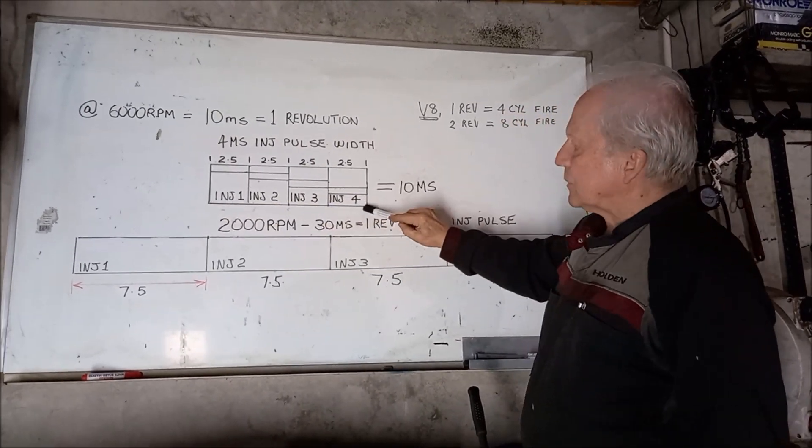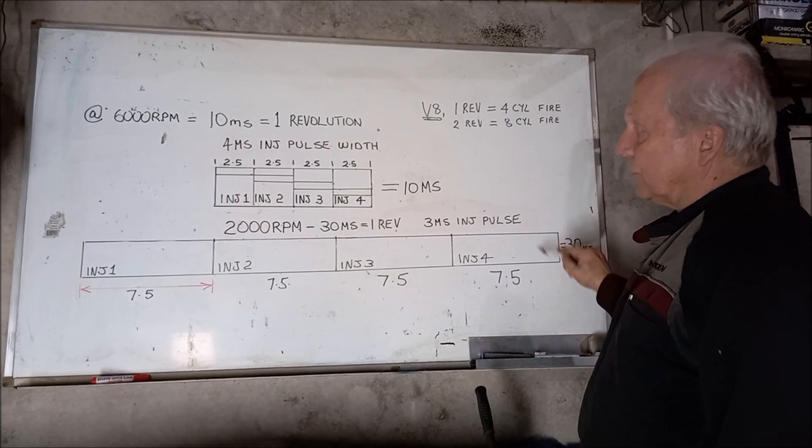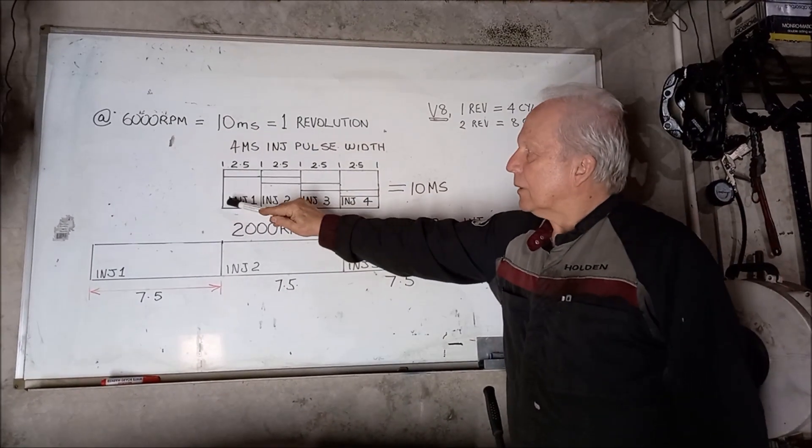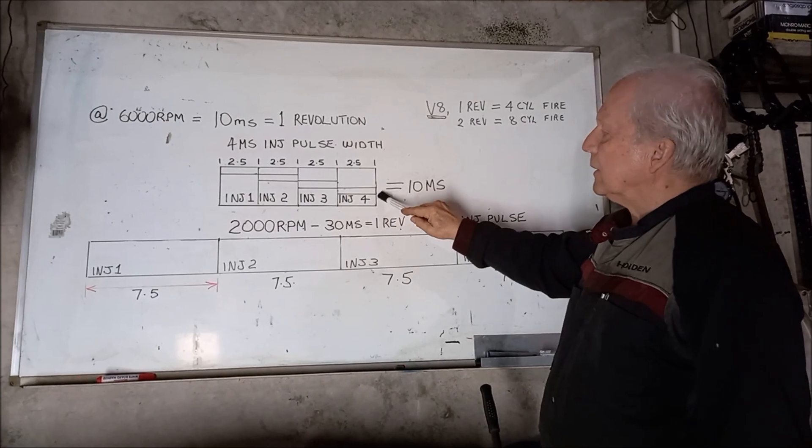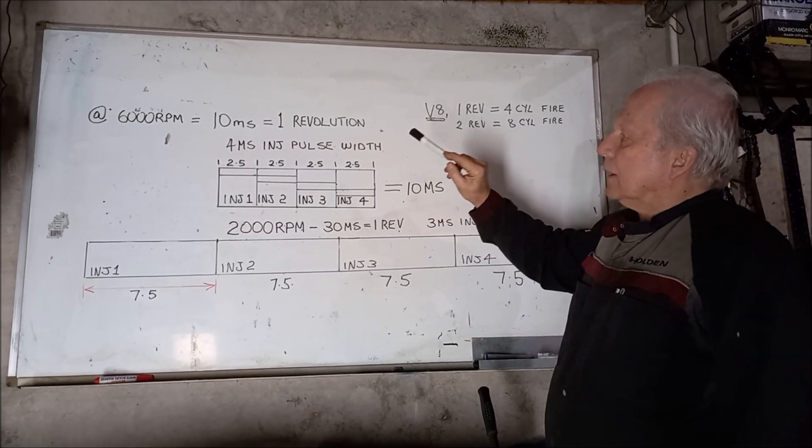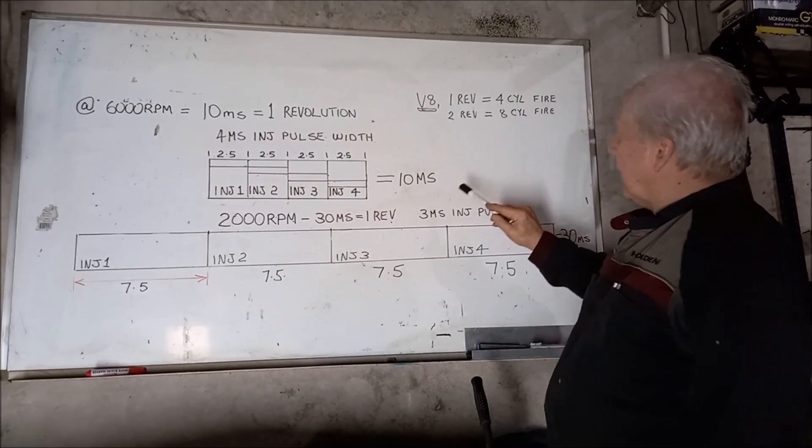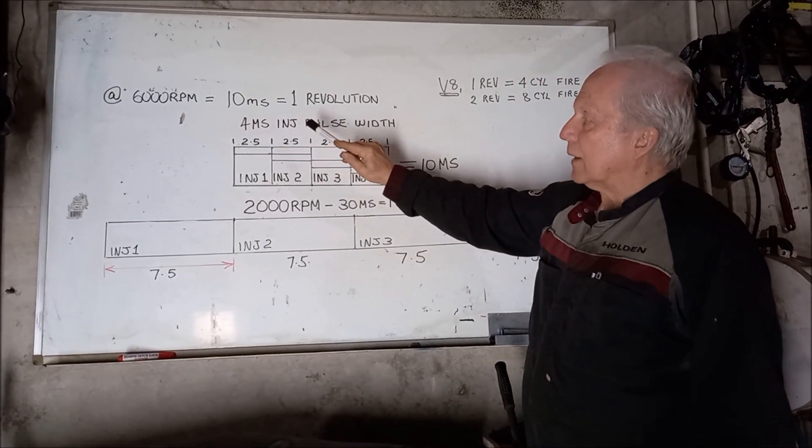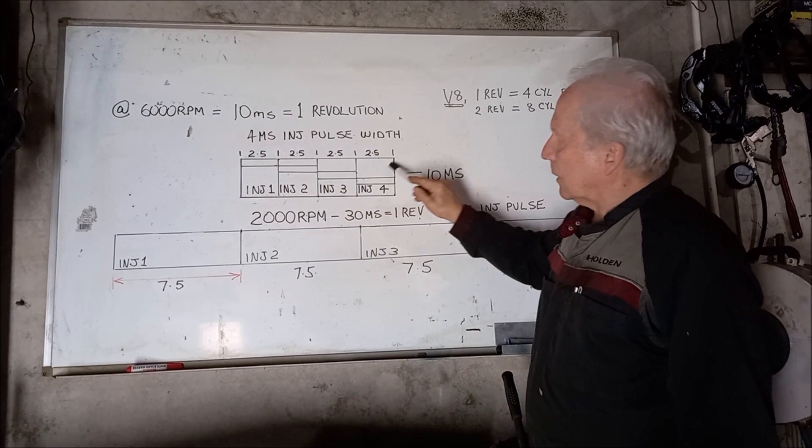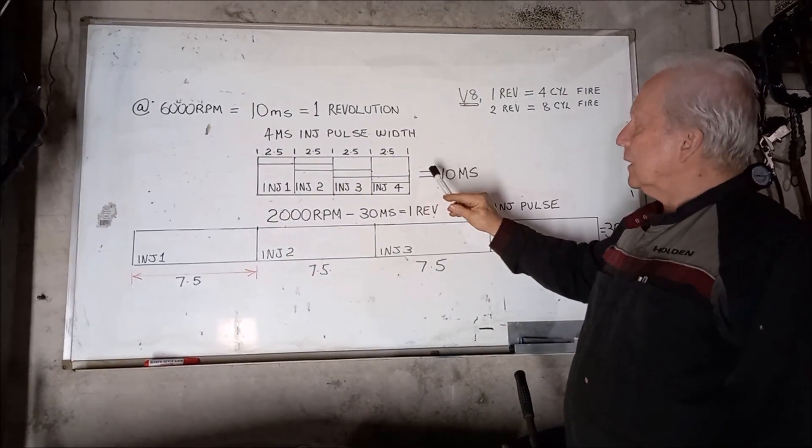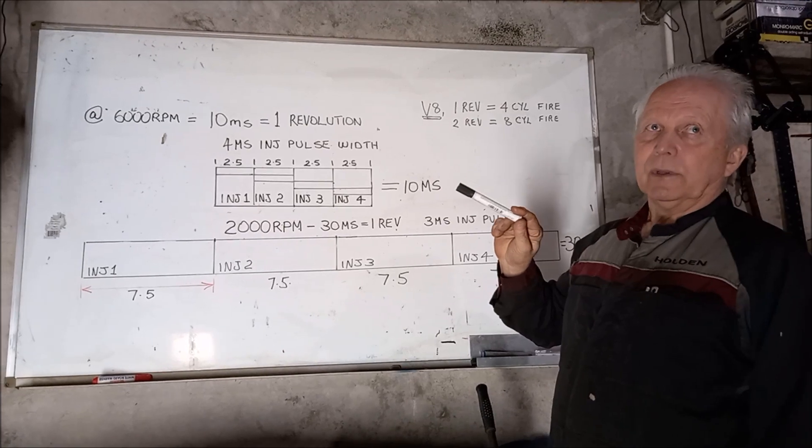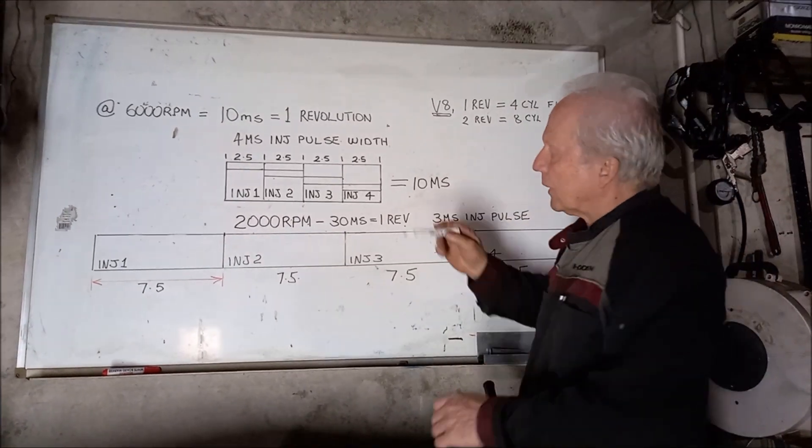This here is about 30 milliseconds which I'll get to in a moment. So we've got one engine revolution takes 10 milliseconds, our injector pulse is four milliseconds per injector. We've got four times four, that's 16 milliseconds. So how do you get 16 milliseconds into a 10 millisecond window?